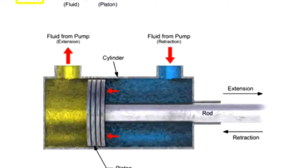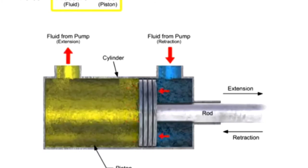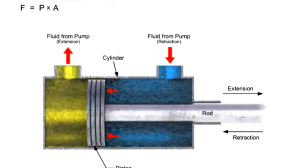The force produced by a cylinder can be found by multiplying the pressure times the area of the piston surface against which the fluid is working. This area is called the working area.